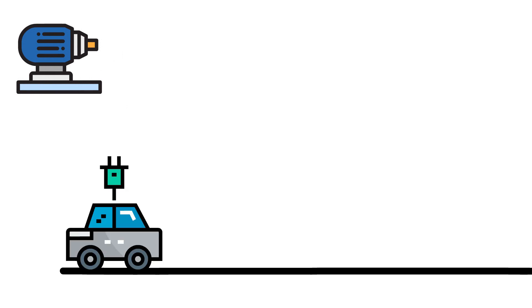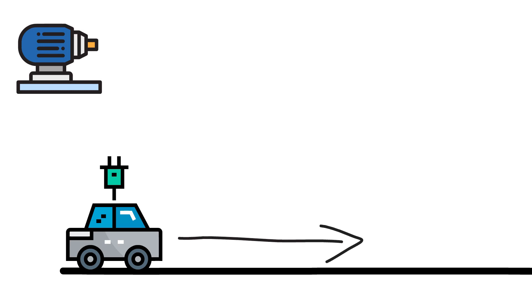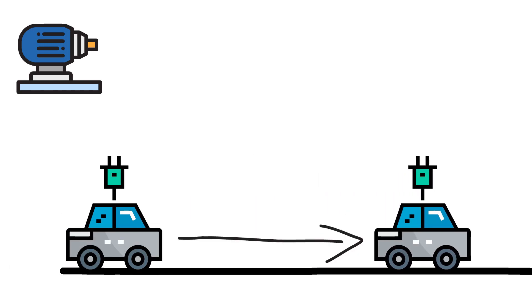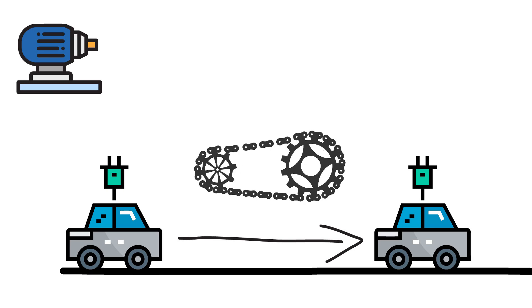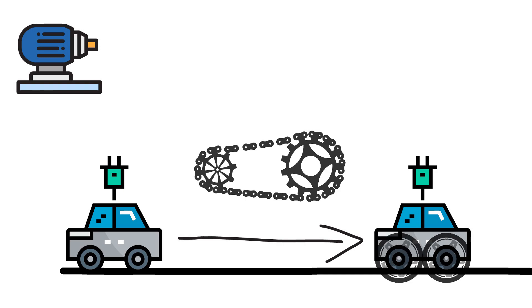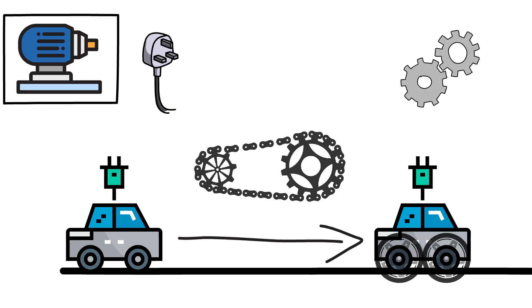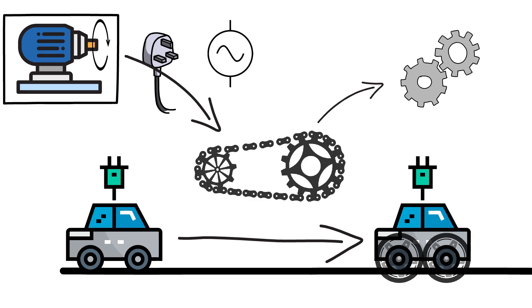First, we'll start with the motor. If we are considering an electric vehicle, the basic and most important requirement is that it should move. To do that we need mechanical energy to rotate the wheels. In electric vehicles, that job is done by a motor — it converts electrical energy into mechanical energy. As electrical energy is provided to the motor, it rotates the rotor, and through the drivetrain this motion is transferred to the wheels and the vehicle moves.